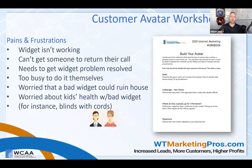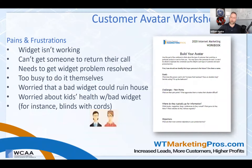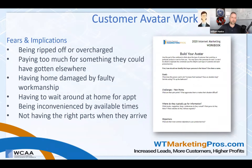Pains and frustrations are a big one. Things like: my widget isn't working, my blinds won't close, there's too much sun coming in. Maybe it's the holidays and they need new cornices, or they want awnings to block the sun outside. Another one is concern about kids' health — blinds with cords. These are the things they're struggling with that you can fix.